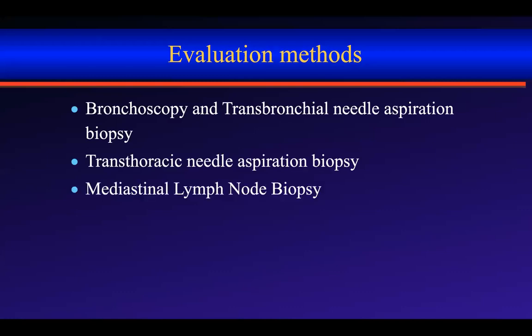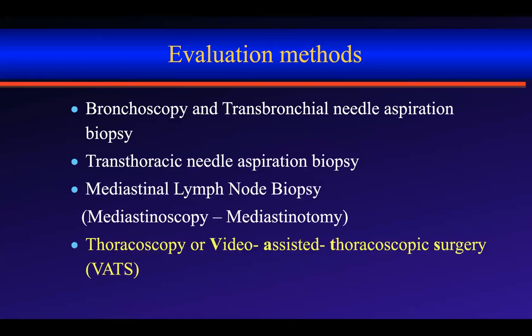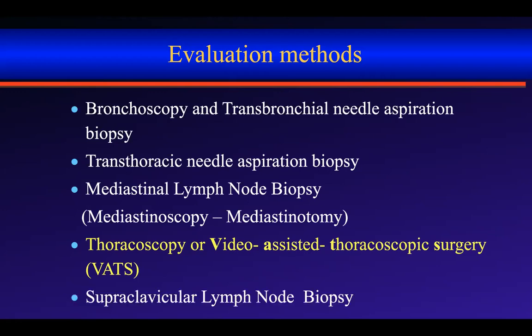We can see the tumor as a high metabolic activity lesion on PET-CT. Regarding evaluation methods: bronchoscopy and transbronchial needle aspiration biopsy should come first, especially for hilar tumors. Transthoracic needle aspiration biopsy is good for peripheral tumors. Mediastinal lymph node biopsy can be performed in patients with very large mediastinal lymph nodes. Mediastinoscopy, mediastinotomy, and thoracoscopy — called video-assisted thoracoscopic surgery or VATS — are also available.